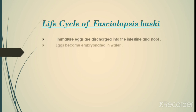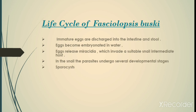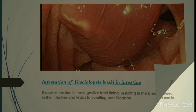The life cycle of Fasciolopsis buski consists of the following: immature eggs are discharged into the intestine and stool; eggs become embryonated in water; then eggs release miracidia which invade a suitable snail as an intermediate host. In the snail, the parasite undergoes several developmental stages: the sporocyst, redia, and cercaria. Infestation of Fasciolopsis buski in the intestine causes erosion in the digestive tract lining, resulting in bleeding and pain in the intestine, and leads to vomiting and diarrhea.